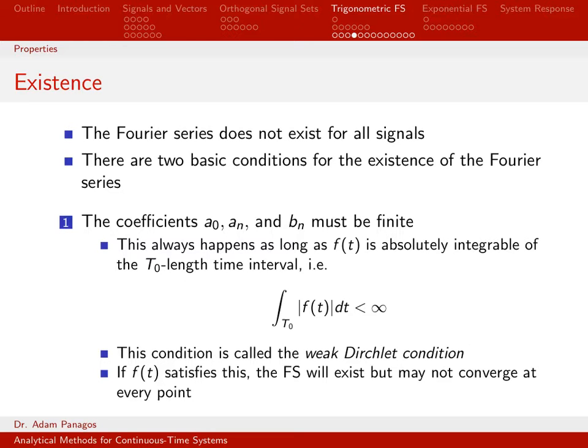One thing that's easy to check is that this always happens any time the signal we're working with is absolutely integrable on the time interval that you're working on. For the Fourier series we pick a time interval, some T0 length time interval that we try to represent the signal. If on that time interval we can take the integral of the absolute value of the signal and get a number less than infinity, this right here, by definition, is what we mean by absolutely integrable.